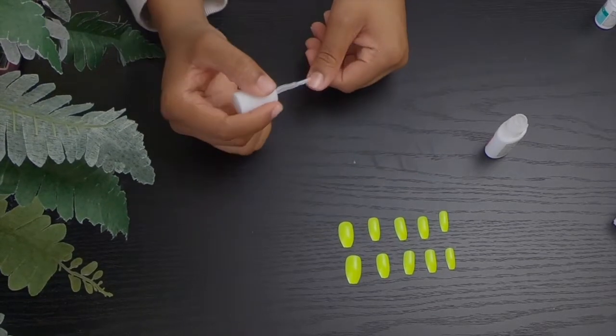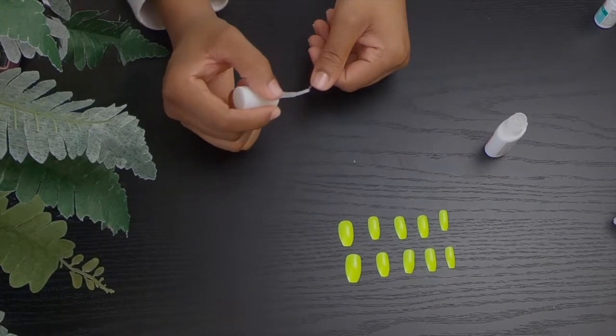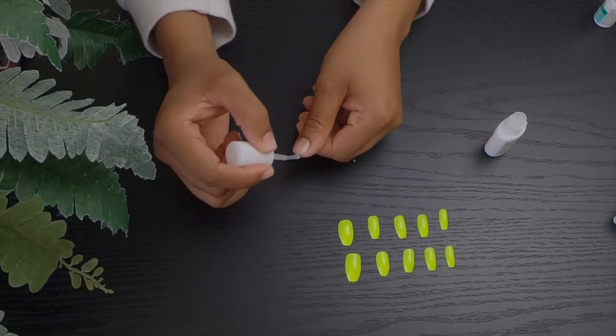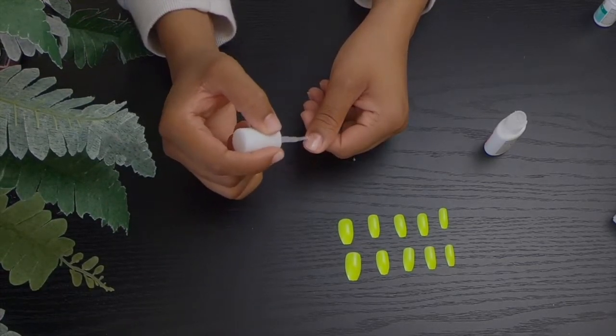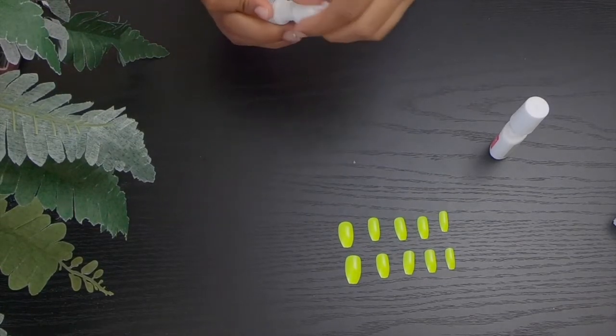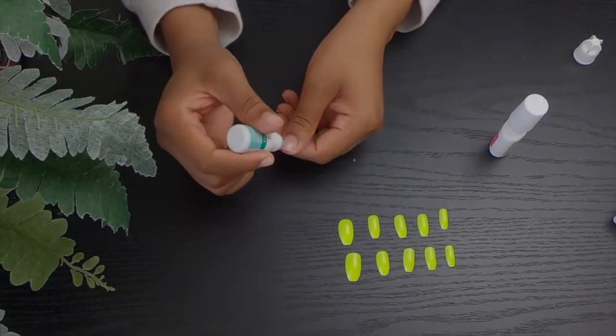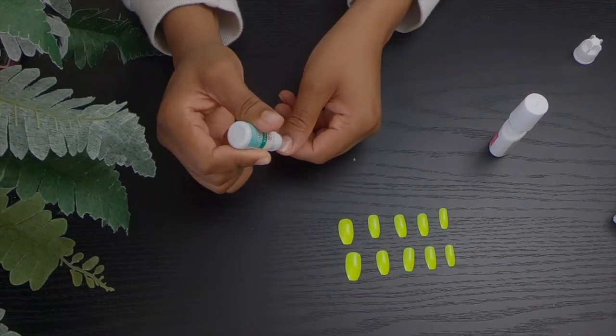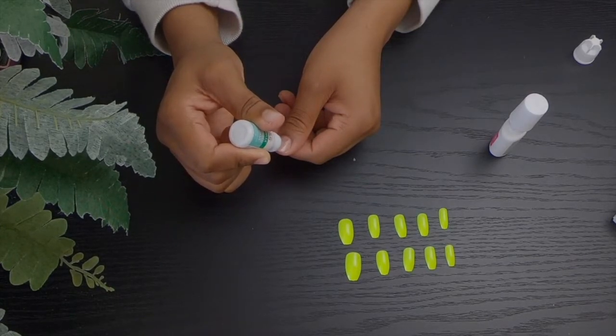Before applying the press-on nails, I'm going to first go in with my two coats of glue, and then I'm going to apply the nail to my finger and hold it there for at least 30 seconds or until I feel like the nail is dry. I normally like to put on a lot of glue because I want the nails to last a long time, so I'm going to do that same process over and over on all my nails.